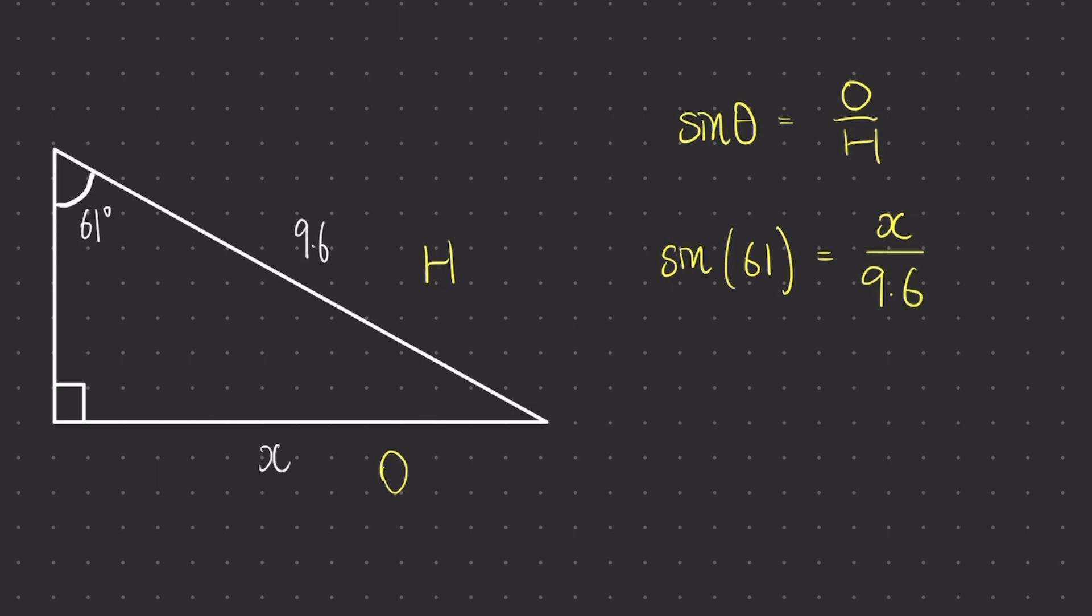So let's solve this equation by multiplying both sides by 9.6. We're going to treat sine plus the bracket that comes after it as an entity in our equation. So if we times, we times sine of 61 by something.